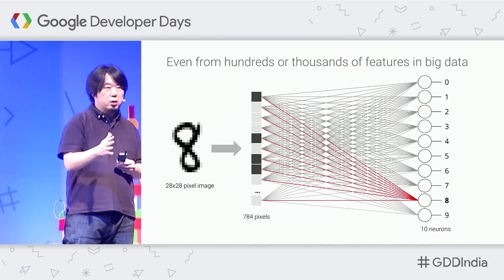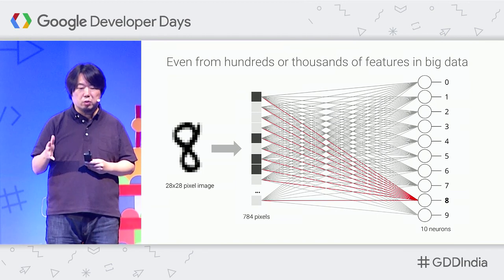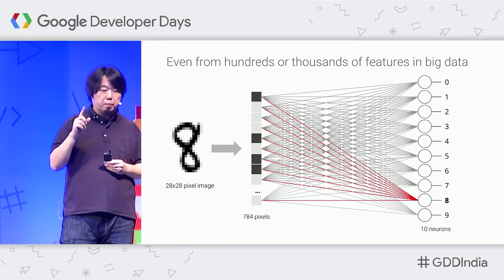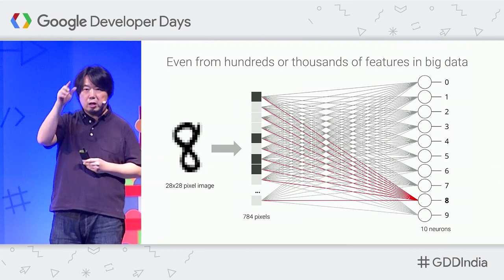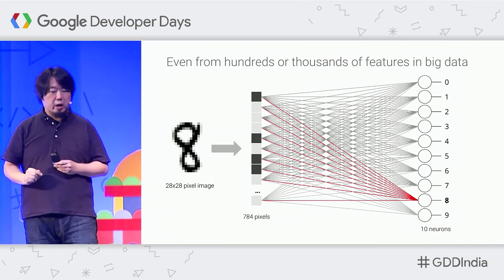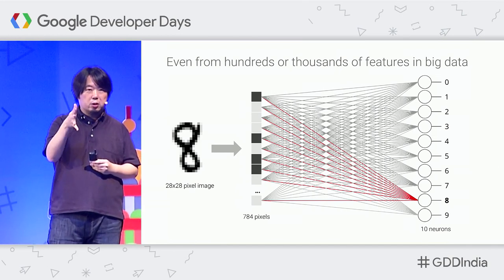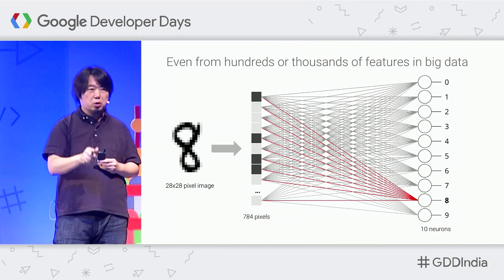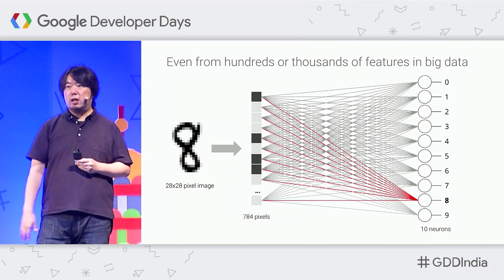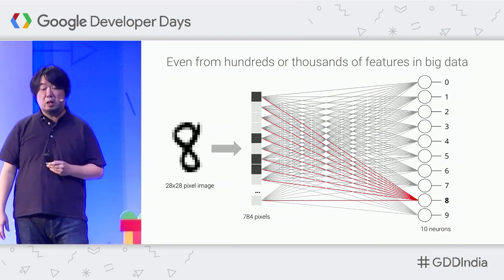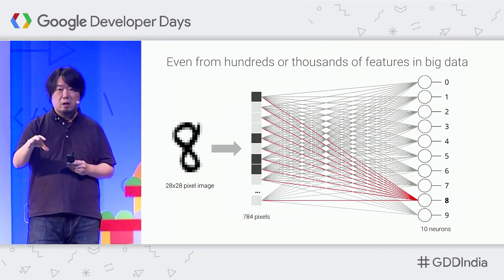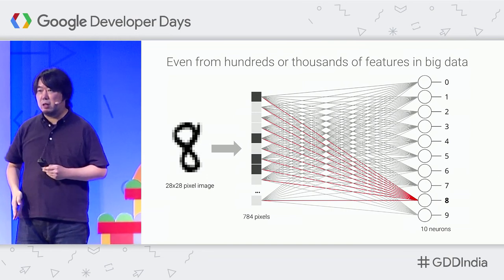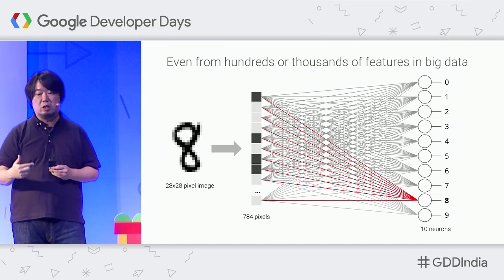You can extend this technology to solve many other kinds of problems, such as image recognition. For example, if you have handwritten text images of 28 by 28 pixels, you can flatten those pixel data into a single vector with 784 data points and feed them directly into the neural network. With a single-layer neural network — the simplest design — you can still get decent recognition accuracy of 80 or 90%, training it to determine which pixels indicate digit 8, 6, or 0.